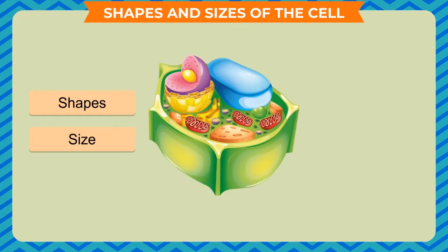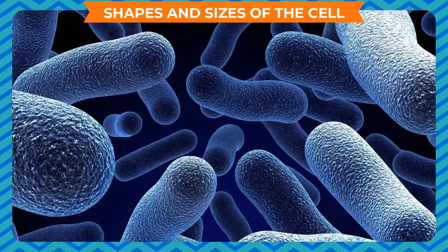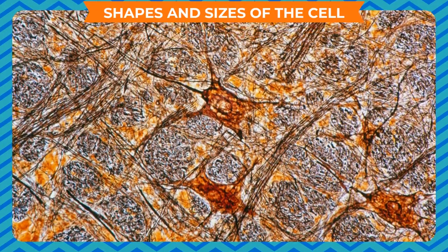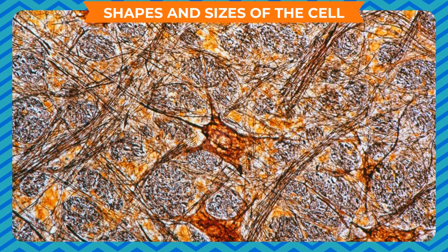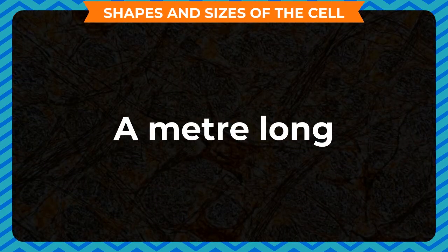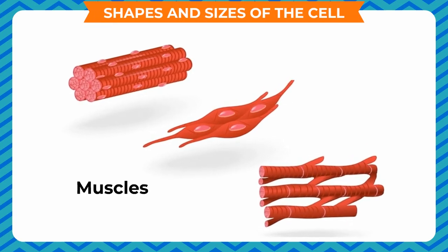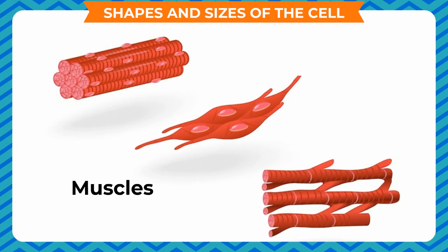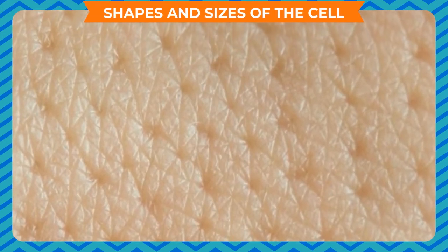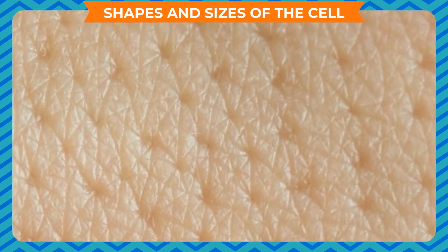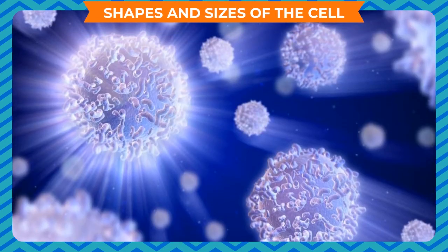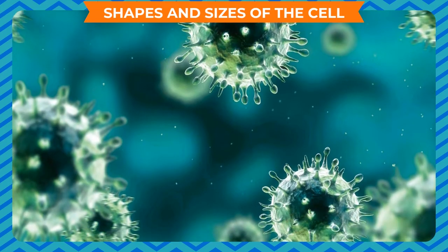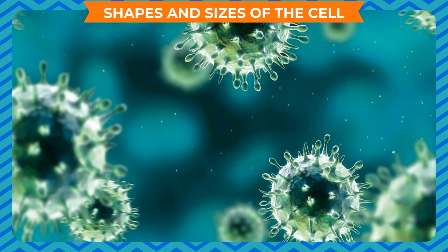The cells have different shapes and sizes depending on the functions they perform. For example, nerve cells have fibers which may be over a meter long. Cells of the muscles are long and thin. This is because they have to contract and relax. The skin cells have a flat shape so that they can provide protection over a longer area. White blood cells are capable of changing their shape. This helps them in engulfing the germs while destroying them.